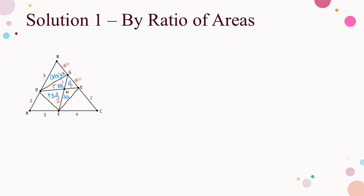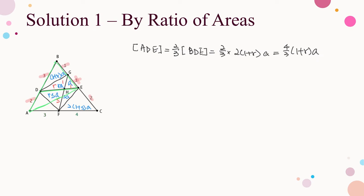By the ratio GE to EC, which is 1 to 2, area of FEC is 2 times (1 + S) times A. By the ratio AD to DB, which is 2 to 3, area of ADE is 2/3 of area of BDE, that is (4/3)(1 + R) times A. By the ratio AF to FC equals 3 to 4, area of AFE equals (3/4) times area of FEC, that is (3/2)(1 + S) times A.